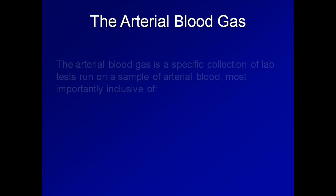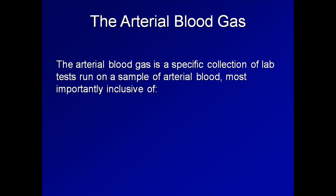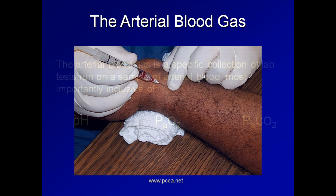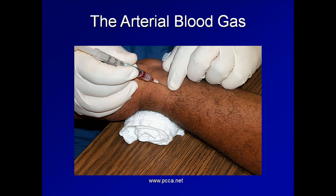The arterial blood gas is a specific collection of lab tests run on a sample of arterial blood, which is most importantly inclusive of the arterial pH, the partial pressure of oxygen, abbreviated PaO2, and the partial pressure of carbon dioxide, abbreviated PaCO2. Here is a patient having an ABG drawn through a puncture in the radial artery, which is the typical location for this, though it can also be drawn through the femoral artery if absolutely necessary. An ABG can also be drawn through an arterial line, particularly in intubated ICU patients, where serial samples can be drawn and compared without the need for additional punctures.